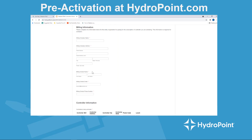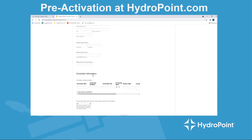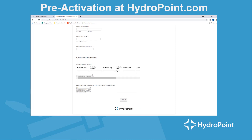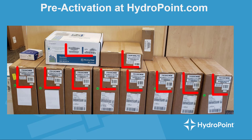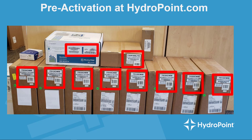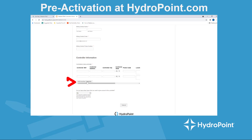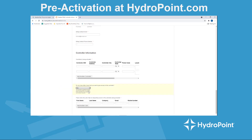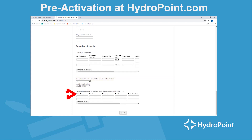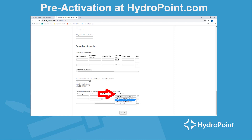We also ask for billing information — it's important that we set up the account where the WeatherTrack subscription will go, so we collect the billing name, address, and contact information. For the controller information, remember that everything you need is printed on stickers on the outside of the WeatherTrack box, so you don't have to take the controller out of the box for pre-activation. Enter your controller serial number and the address of the controller installation. You can also add multiple controllers if you're doing a bunch on the same site. Lastly, select which users should be associated with this controller, providing each user's name, contact information, and their desired level of access.